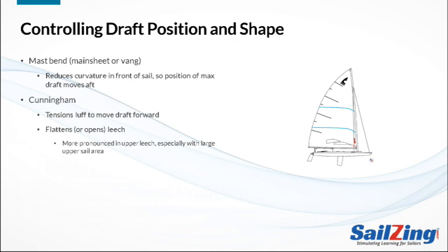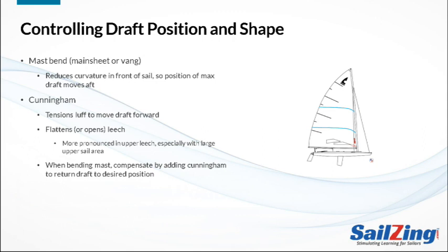This primarily applies to the upper leech and is more pronounced in boats with a large sail area near the top, such as a sea scow. So we use Cunningham to compensate for mast bend. As we bend the mast with mainsheet tension or vang, the draft moves aft. We compensate by adding Cunningham tension to return the draft to its desired position, usually 40 to 45 percent. This also opens the upper leech, which depowers the top of the sail. Finally, we control the exit shape of the leech with leech tension using the mainsheet or vang — more tension hooks the leech or flattens it.